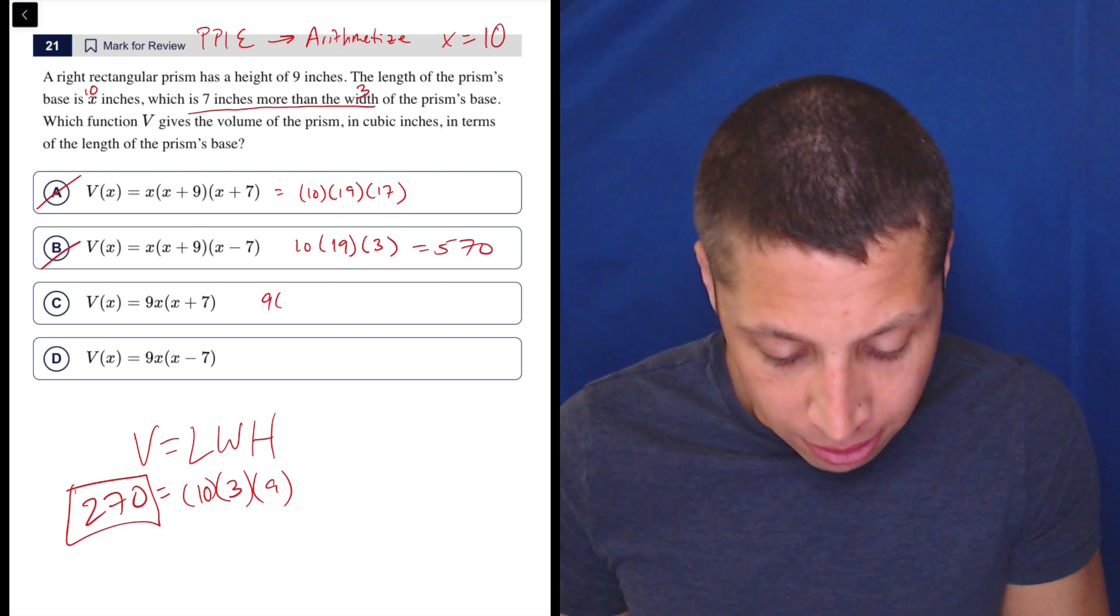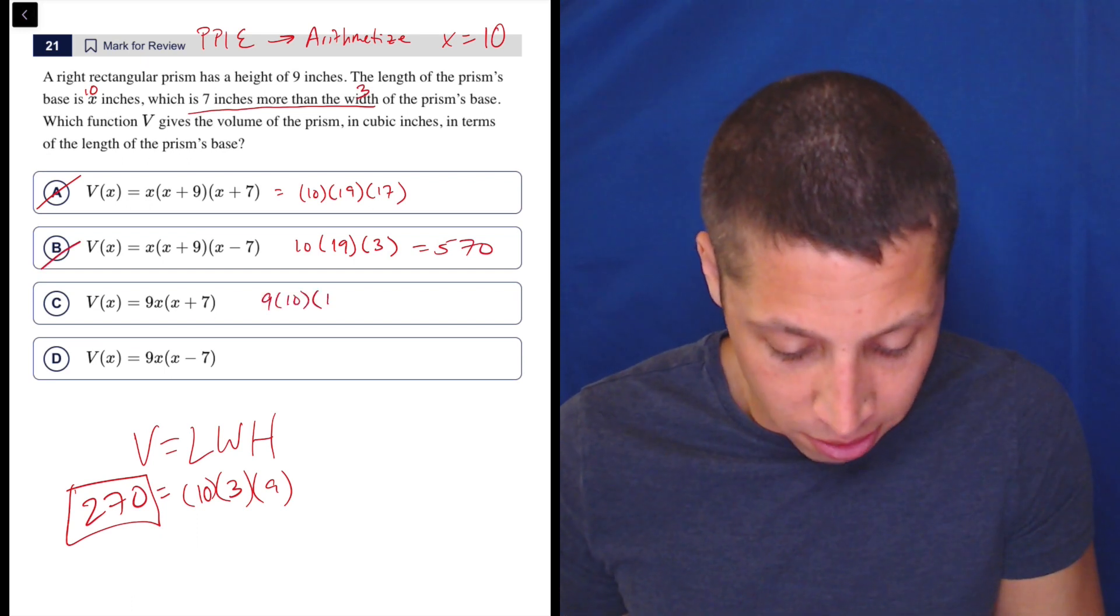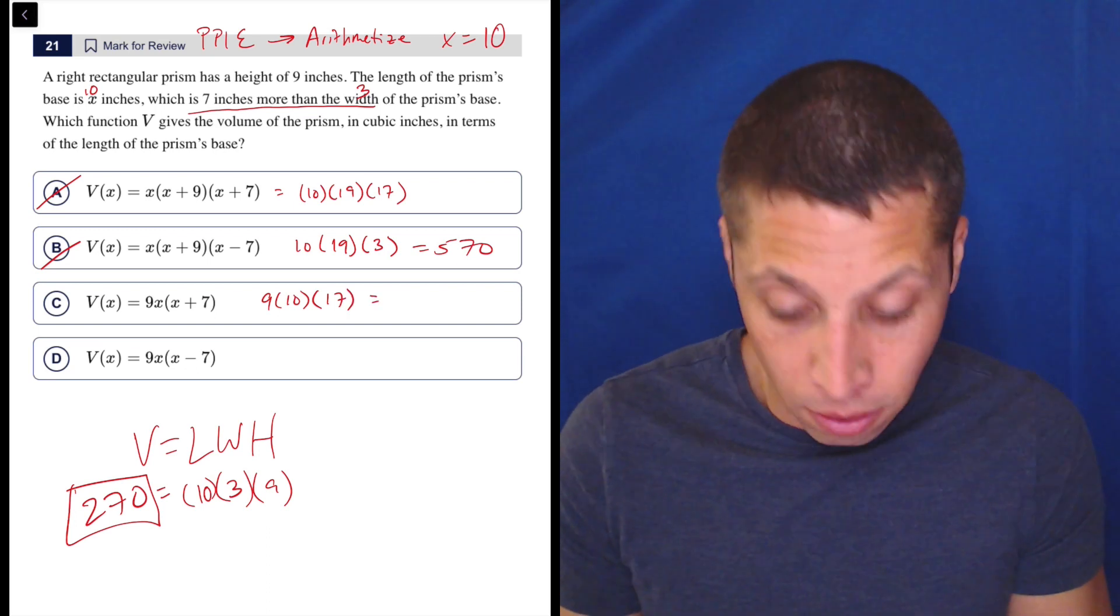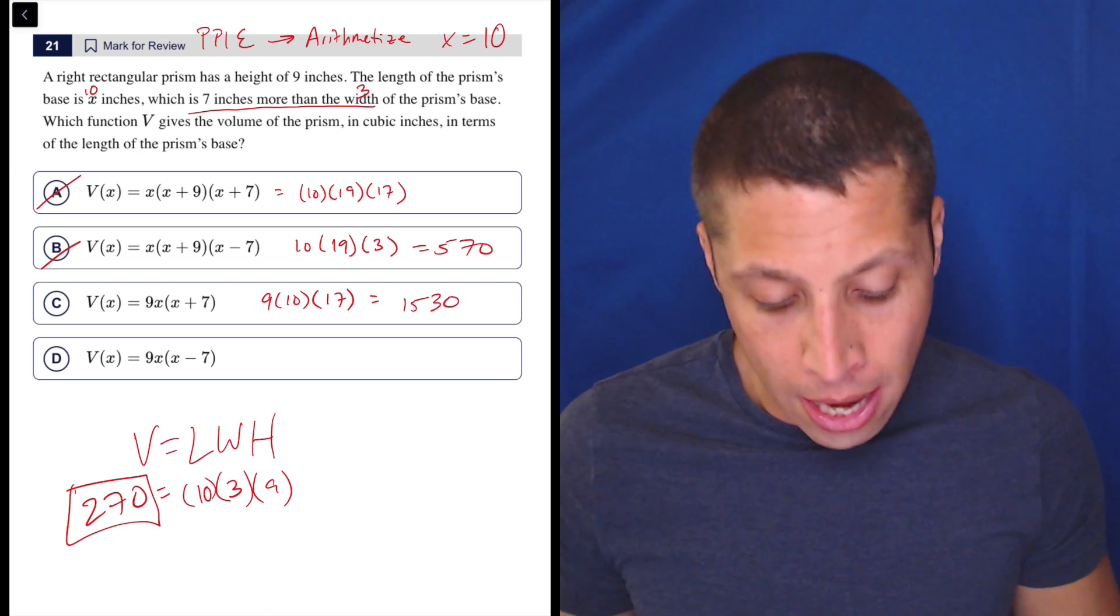And then here we've got nine times 10 times 17. And we also know that this is wrong. Nine times 10 times 17 is 1530. But this is the trap.